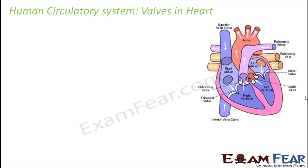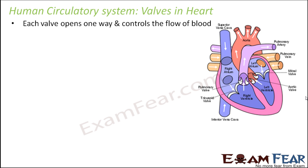It is not only the chambers which are present inside the heart — there are also some valves which act like doors between the various chambers. These valves give regulation and control on the flow of blood from one chamber to another. Each valve has the speciality that it opens one way and allows blood to flow in one particular direction only — it doesn't allow bidirectional flow.